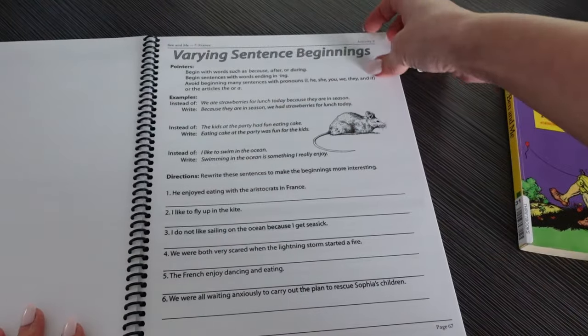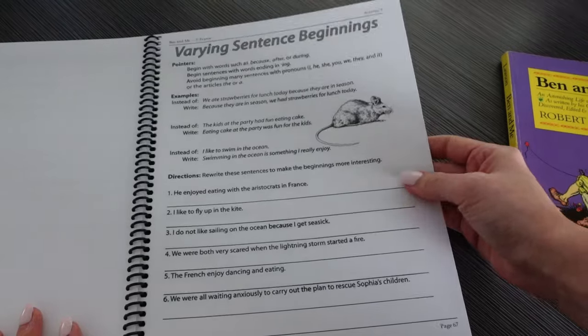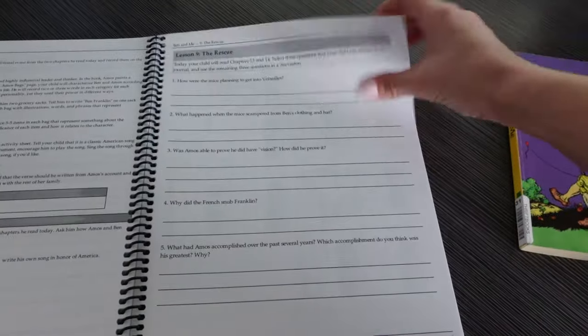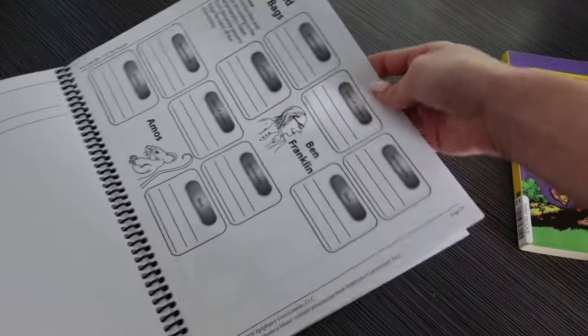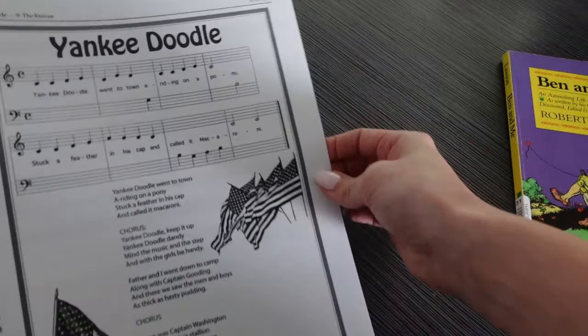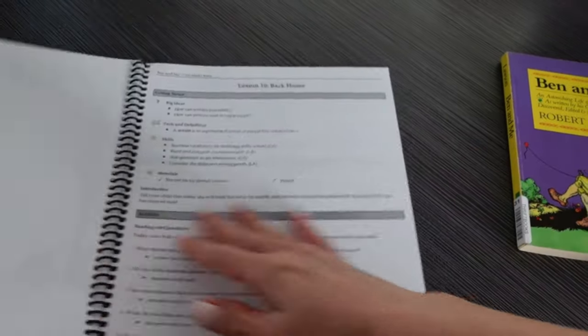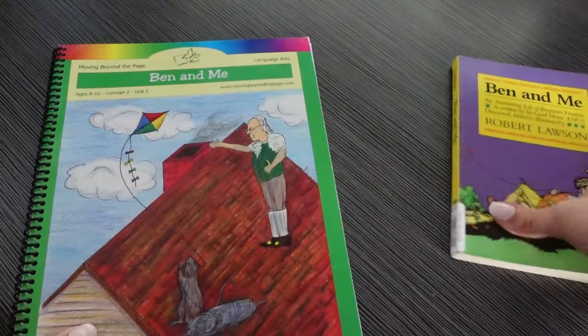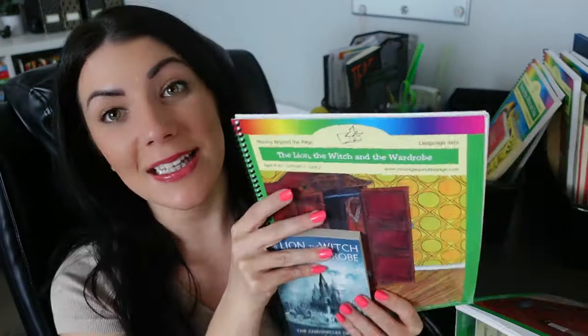This one is about inventing different things, more vocabulary, fact and opinion, a writing rubric. So it looks like they're going to be writing something else in this. There's the Yankee Doodle song, elements of historical fiction and final project, an interview or party for Ben. So this one, they kind of give them an option of what they want to do for their final project.